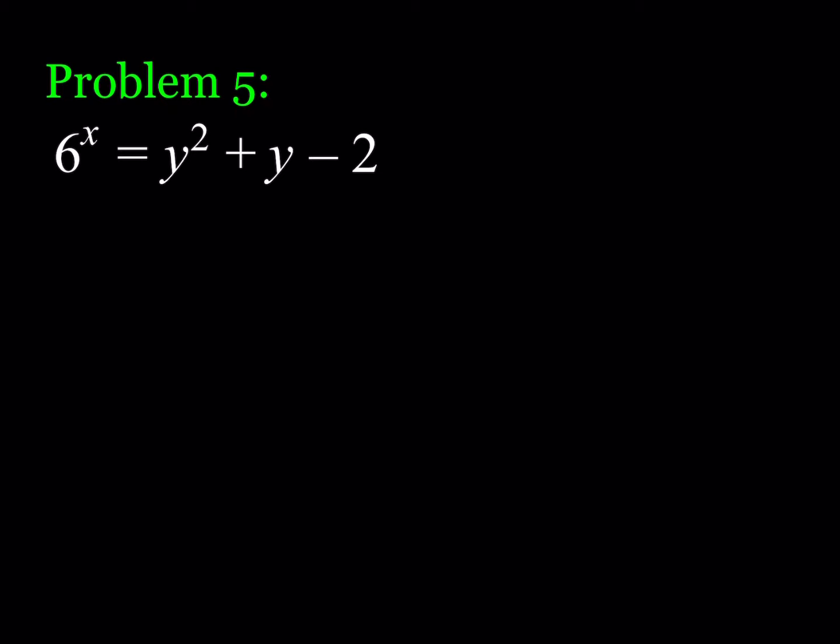This brings us to Problem 5, probably one of the hardest because we have variables in the exponents. These are harder to solve than polynomial Diophantine equations. We're going to use modular arithmetic — specifically mod 5, because that would reduce the base-5 term to 1.